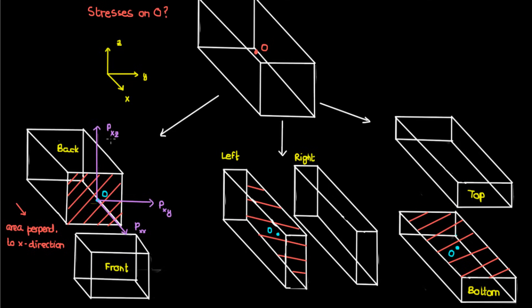The first subscript in this p denotes the direction the area is perpendicular to. So in this case, the first subscript x means that the cross-sectional area we're looking at is perpendicular to the x direction. The second subscript denotes the direction the force is acting in.